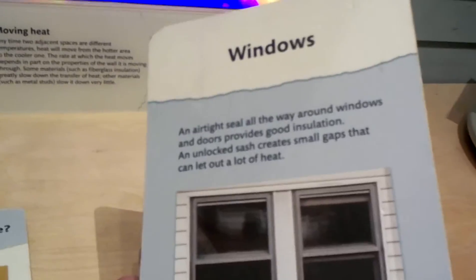You lose heat here around a window. So if you put insulation or weather stripping around a window, you can prevent that.